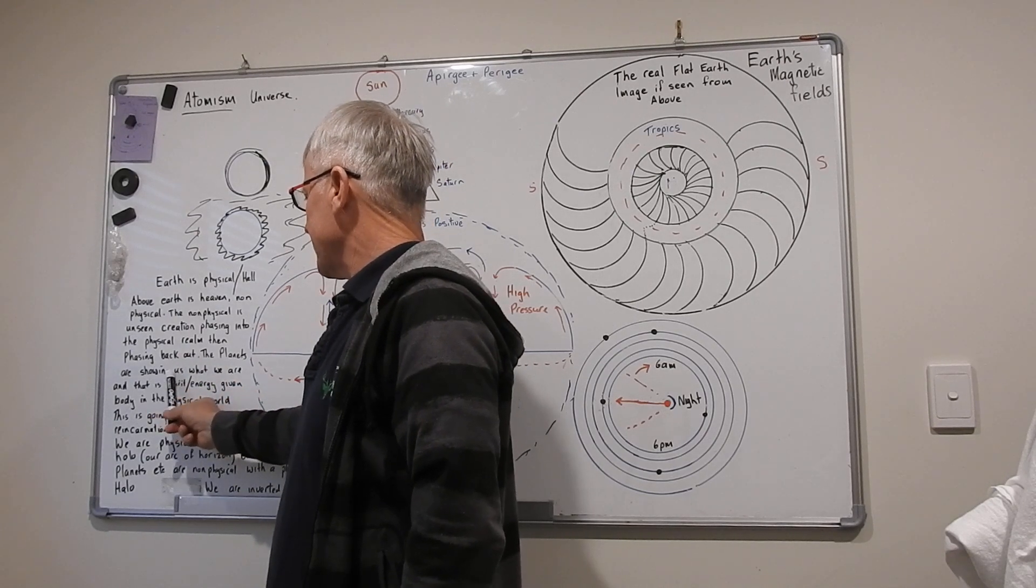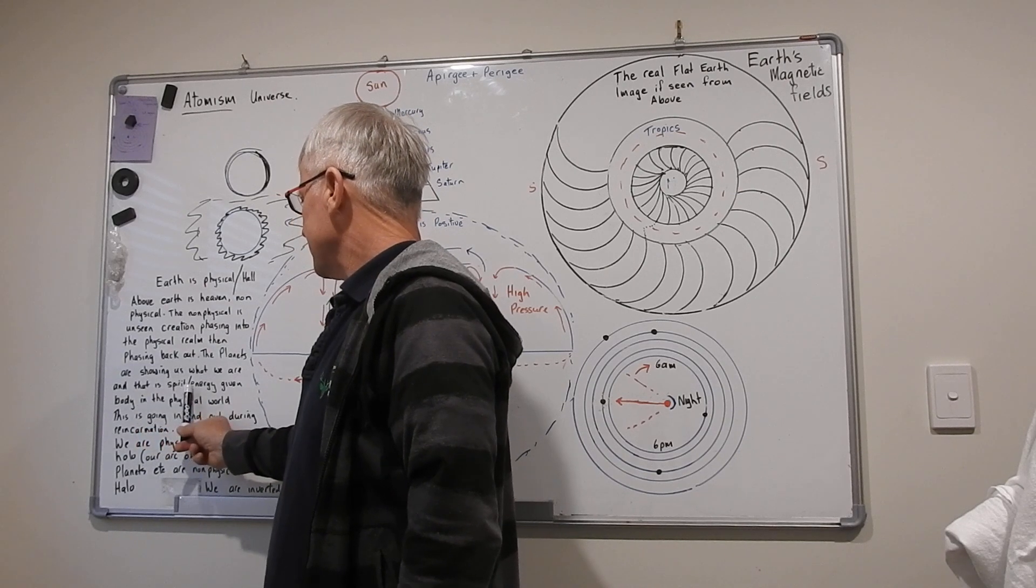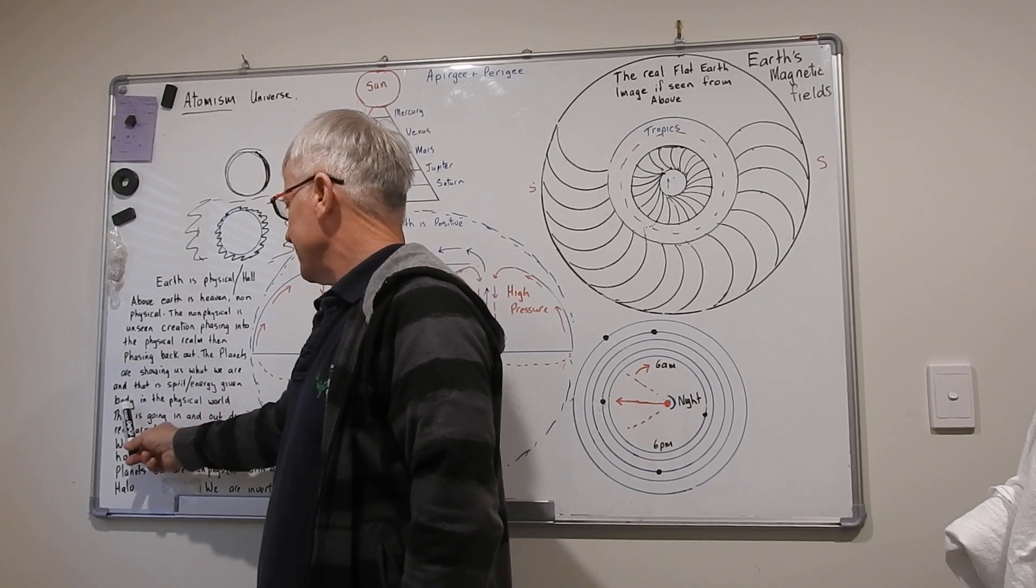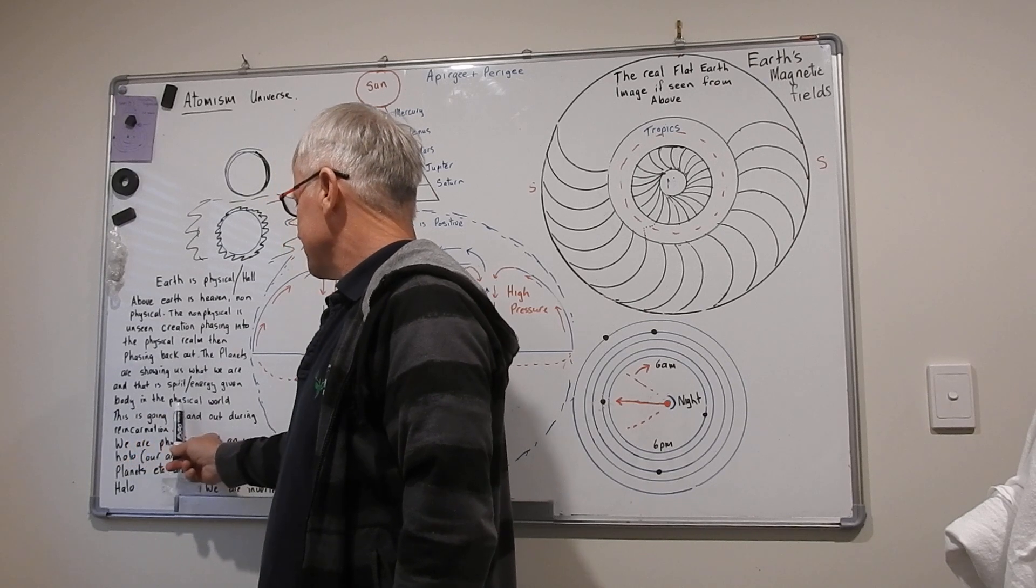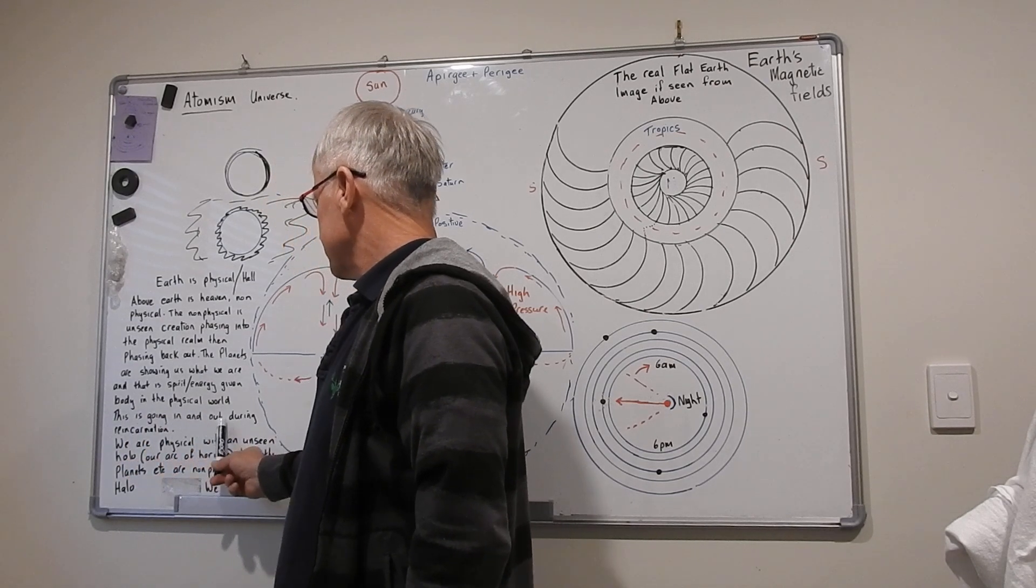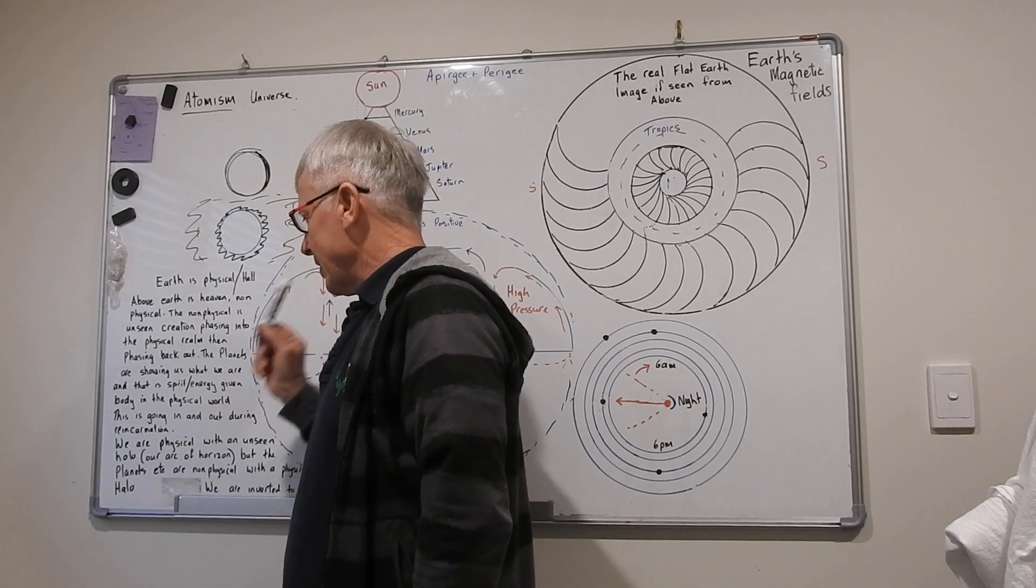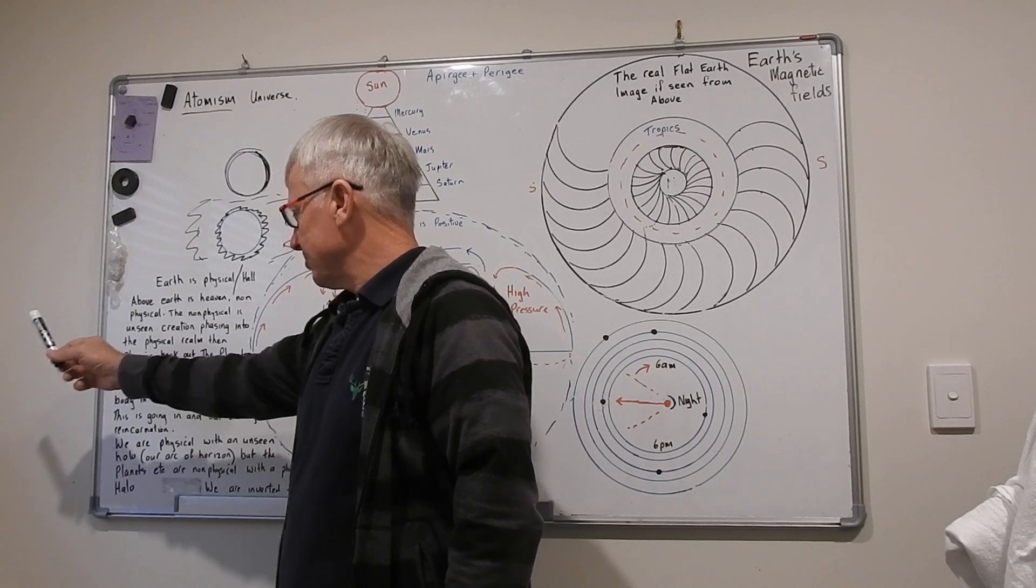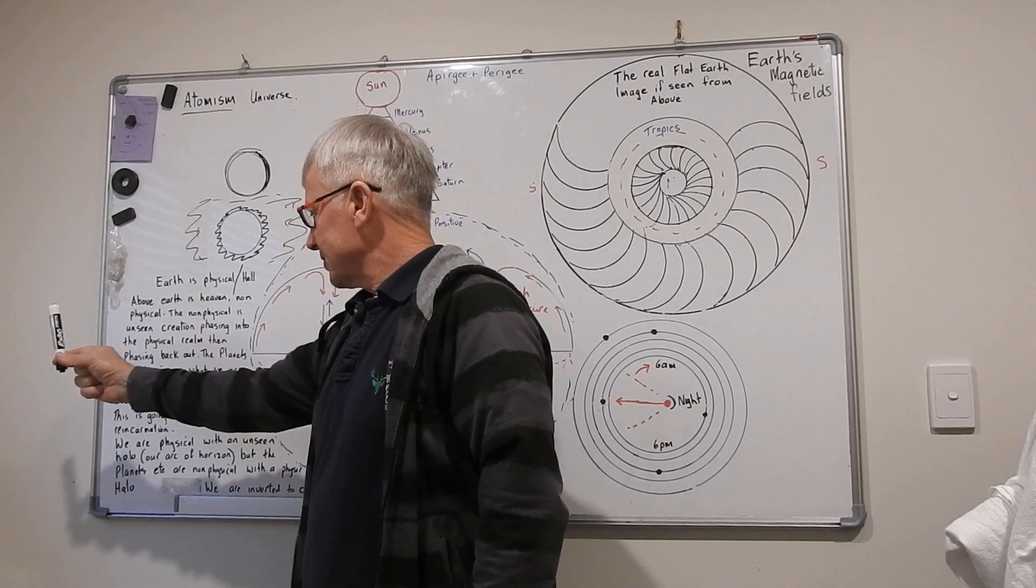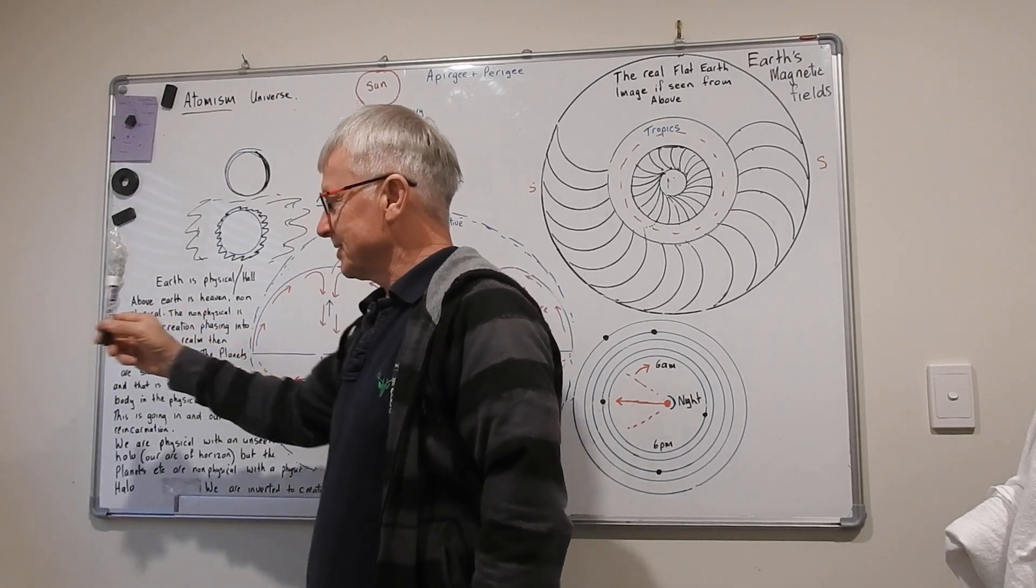The planets are showing us what we are, and that is spirit energy given body in the physical world. This is going in and out during reincarnation. So we go out into the non-physical, back into the physical. We're doing this. And this is the phasing of the planets - they're showing us.